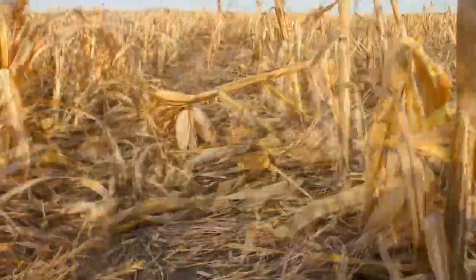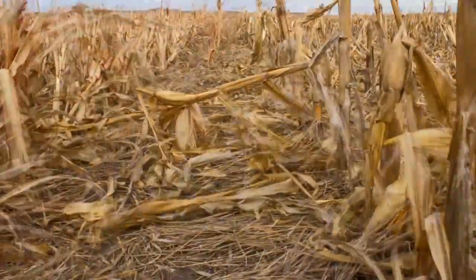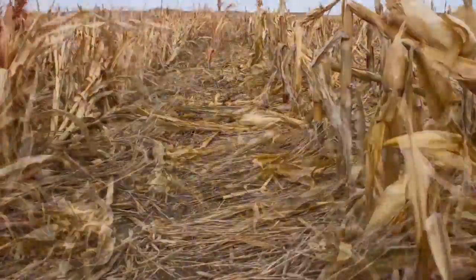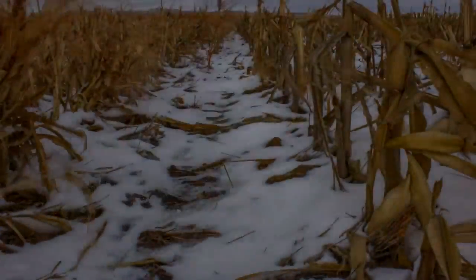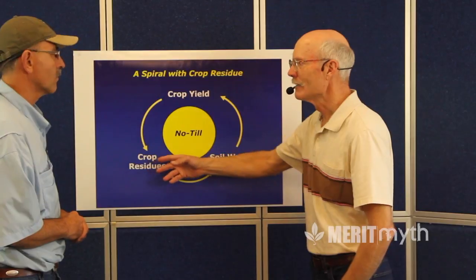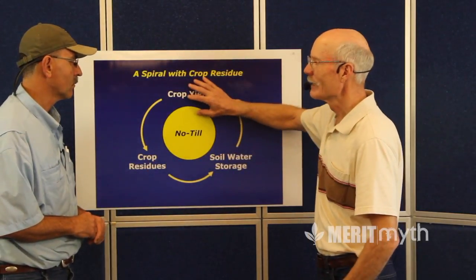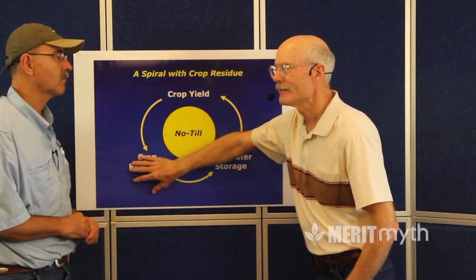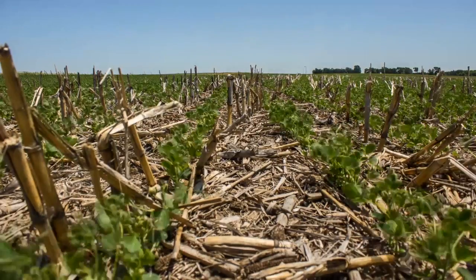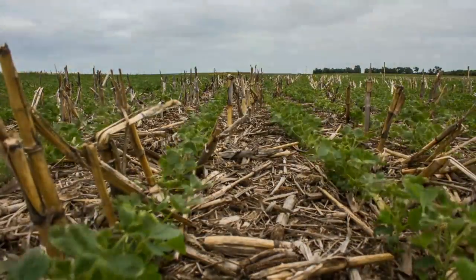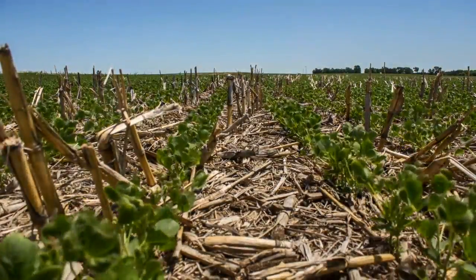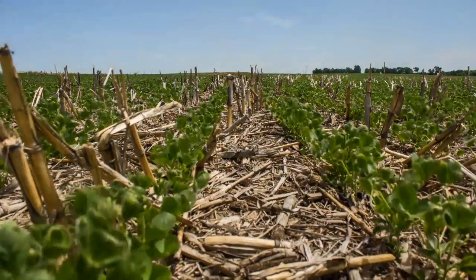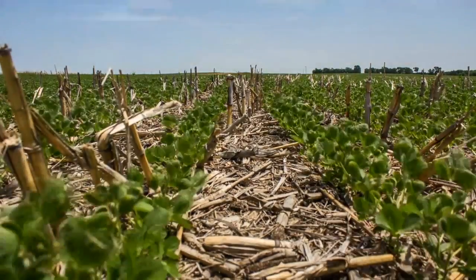When the producers first started no-tilling, they were maintaining the residues on the soil surface. They were increasing the soil water storage from precipitation because the greater the residue, the more effective it is. Because we had more water, we were getting more crop growth. Because we had more crop growth, we were getting more residues, and therefore we were getting more water. It seemed like we were developing a spiral of continuously improving with time.